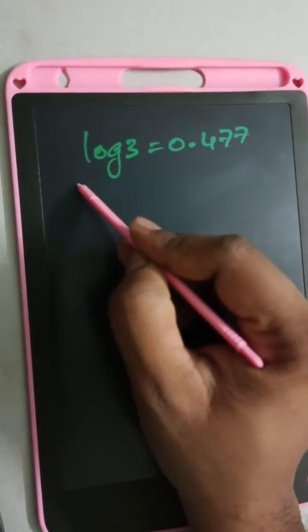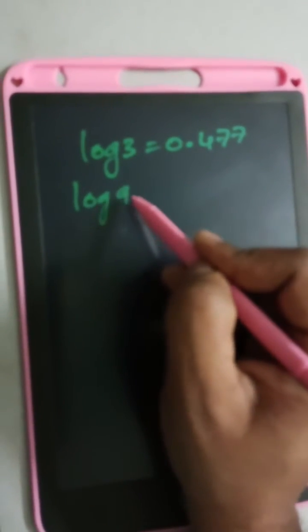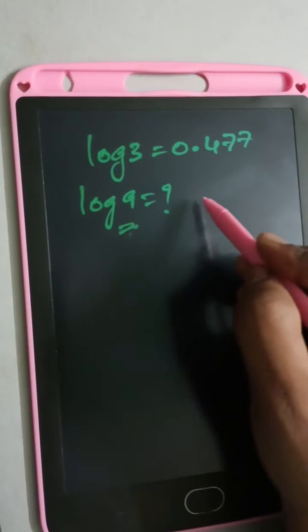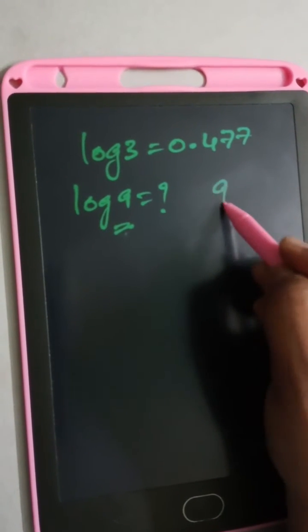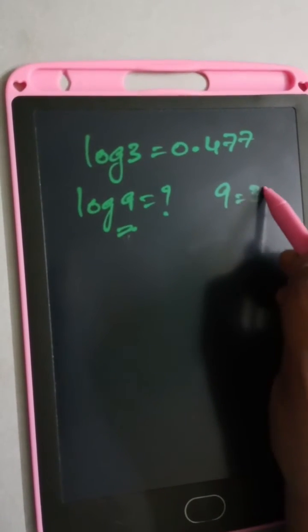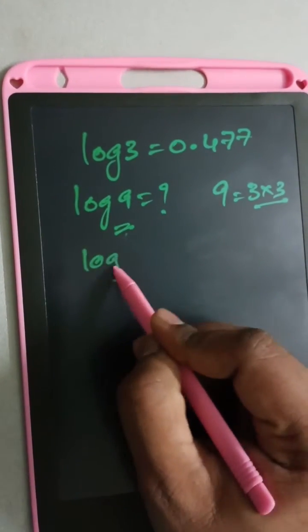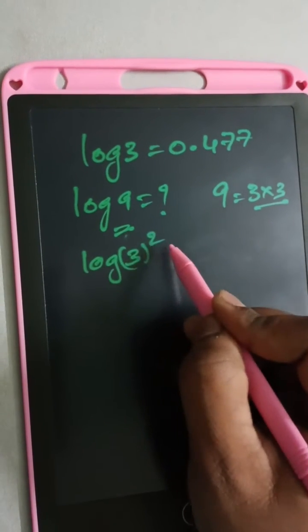Now let's resolve this problem. Log 9 can be written as 3 into 3, so log 3 whole square.